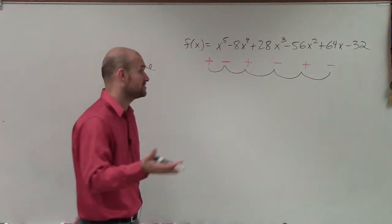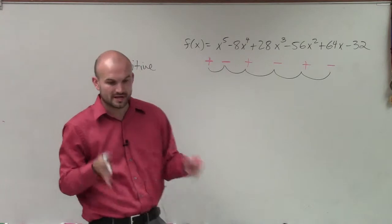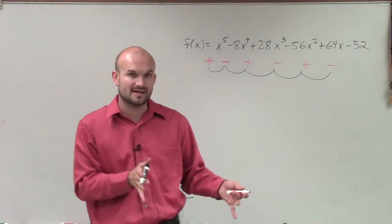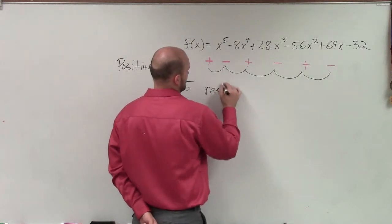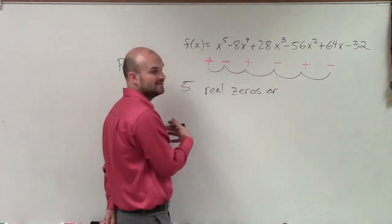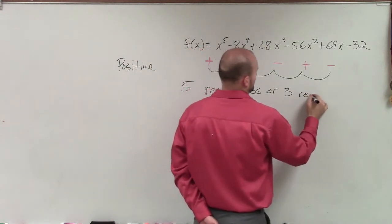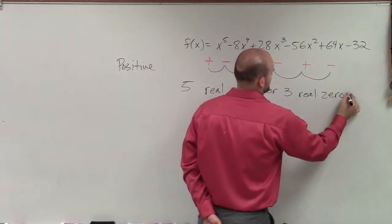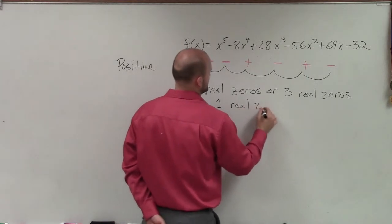So therefore, there's five alternating signs, as we say. So the number of positive real zeros is the number of times you alternate from a positive to negative minus an even number. So you can say there's five real zeros, or minus an even number would be three real zeros, or one real zero.